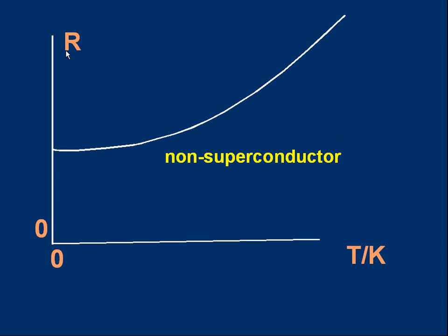Let's start with this graph. On the y-axis, we have the resistance of something, and on the x-axis, the absolute temperature — that's the temperature in Kelvin. Zero Kelvin is absolute zero, minus 273 degrees centigrade. If I take a sample of something like copper and cool it down, the resistance falls and settles down to a final steady value at zero Kelvin. That value is called the residual resistance. Copper is not a superconductor — its resistance at zero has some value.